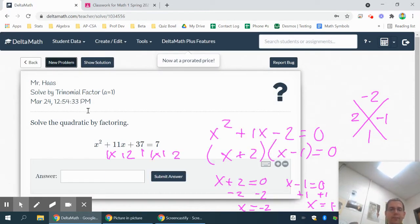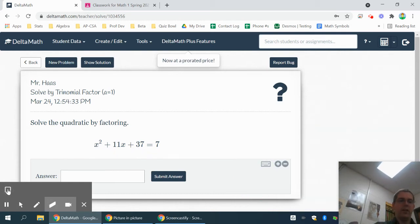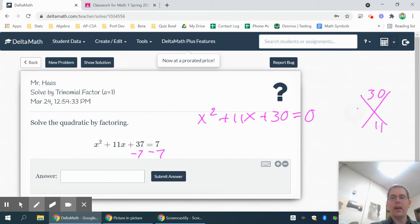We'll try one more like this. On this one I need to get everything on one side. So only thing over there, this is the 7, but I will need to subtract it from both sides. That gives me an x squared plus 11x plus 30 equals zero. I'm trying to multiply to the last number 30 and add to the middle number 11. I believe 6 and 5 are the numbers that will do that. So that's an x plus 6 and x plus 5.